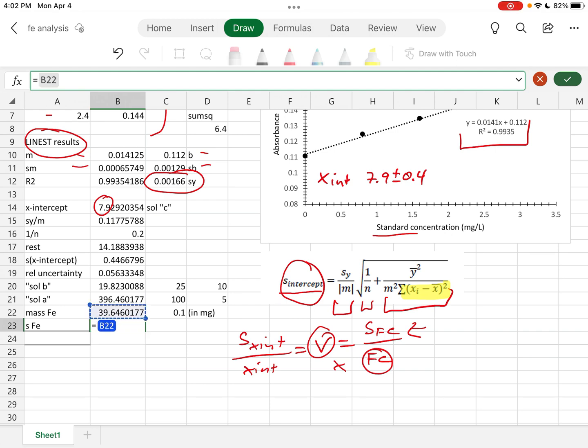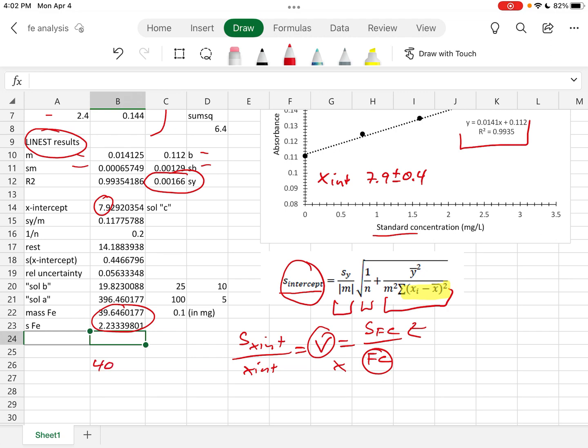So this is equal to iron times 0.05 there we are and we get an uncertainty of plus or minus 2. So if we take these last two numbers, what we end up getting is 40 plus or minus 2 milligrams of iron in the tablet.